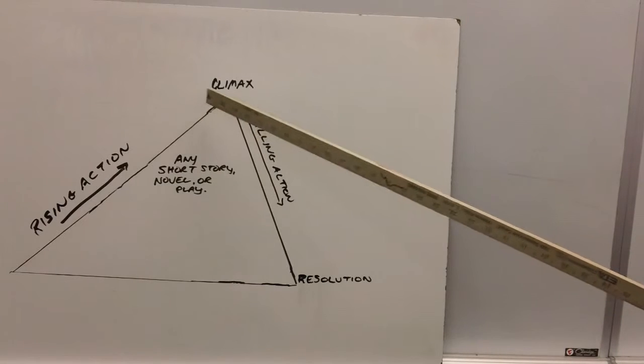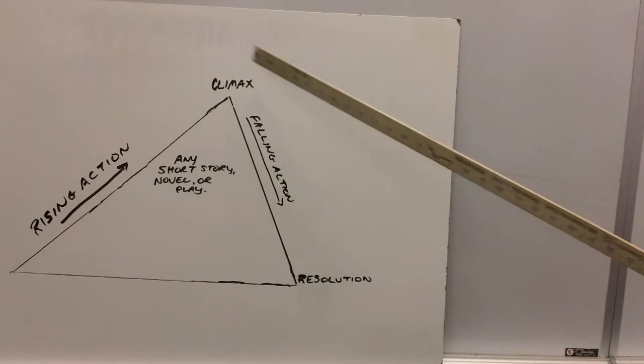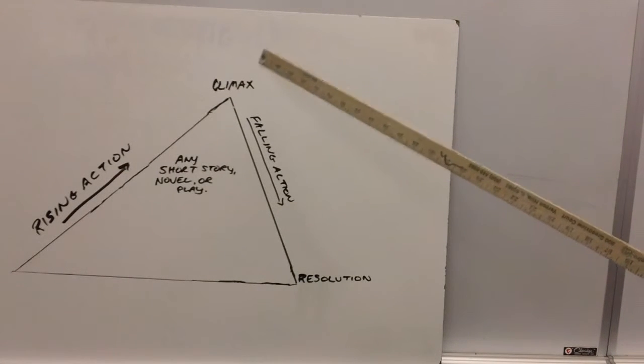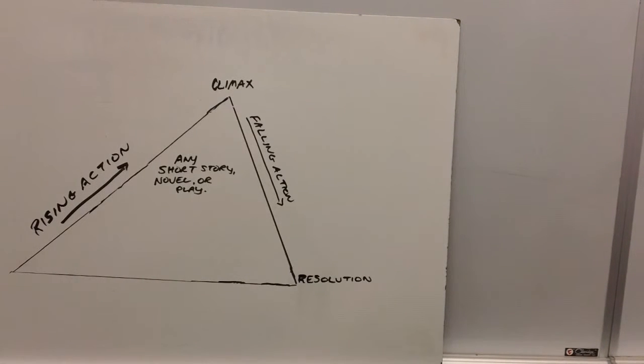All this is leading to the climax. Now the climax in Stray is very clear-cut. When the father puts the dog in the trunk of the car and closes the lid, wow, that's the climax because you don't know at that point what's going to happen to the dog. Is it going to the pound or will it survive? We just don't know at that point.